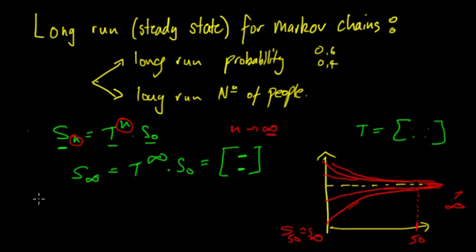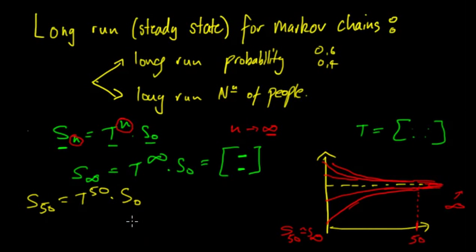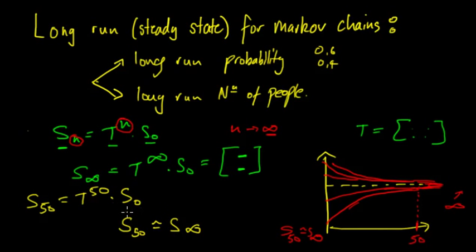So S_50 = T^50 × S_0, and S_50 is approximately equal to S_infinity. On your calculator, find T for the specific question, raise it to the power of 50, and multiply by the initial condition. The number 50 is arbitrary — you could pick 100 or 110. This works because for the long-run steady state we only care about the final outcome, not the previous ones.